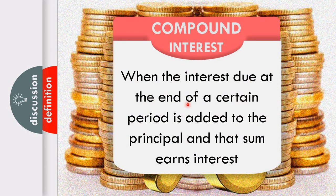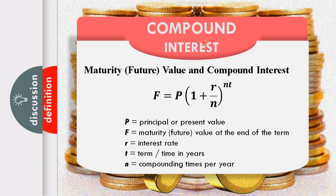Next is compound interest. When the interest due at the end of a certain period is added to the principal and that sum earns interest, it is compounded — unlike simple interest. The formula for maturity value under compound interest is F equals P times 1 plus R over N, raised to the power NT, where P is principal, F is future value, R is interest rate, T is time in years, and N is the compounding frequency per year — annually, semi-annually, quarterly, or monthly.